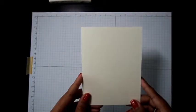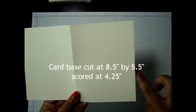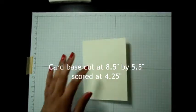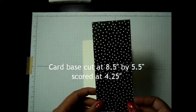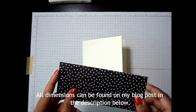So let's go ahead and get started. I've got my card base ready to go. This is some very vanilla card stock. I have cut it at 8.5 x 5.5 and scored it at 4.25. And I've got some designer series paper already cut to 2.5 inches by 6 inches.